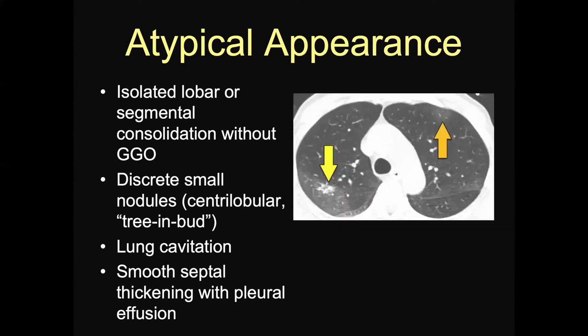This case had peripheral ground glass opacity that fits, but also a cluster of tree-in-bud nodules in the right upper lobe posteriorly. There's a subtle ground glass opacity anteriorly on the left. This patient has a gastric tube in — you can see the metal artifact between the trachea and the aorta — and this patient probably aspirated from the NG tube, causing the tree-in-bud. So it still has an atypical appearance.